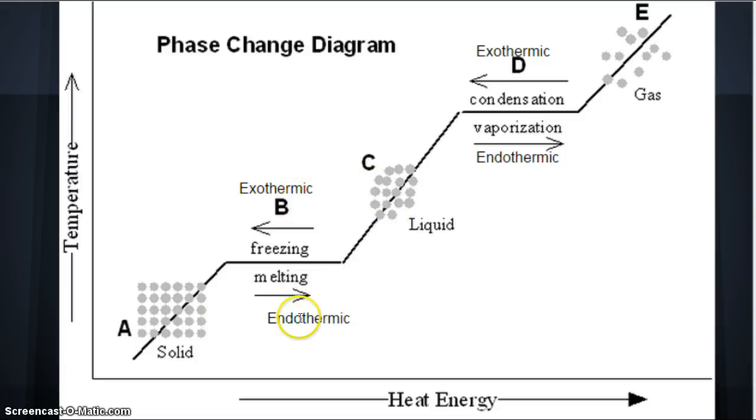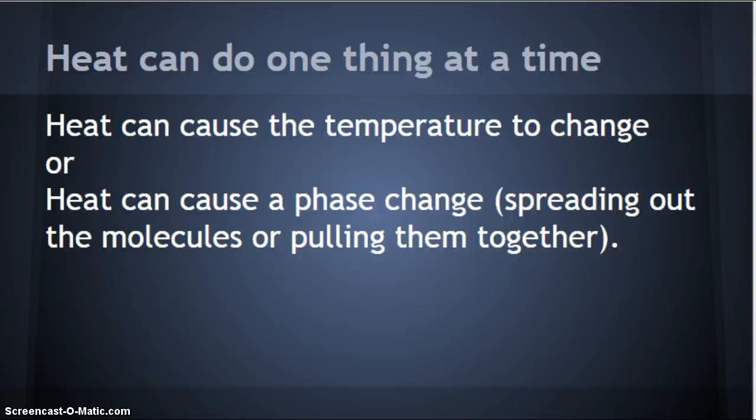We also brought in the terms exothermic and endothermic. So, we're going to review those real quick. But, before I do, heat can do one thing at a time. Heat can either cause the temperature to change or it can cause a phase change. So, heat can do one thing at a time. Do you hear your mom say that sometimes? I can only do one thing at a time. Okay? Like heat.